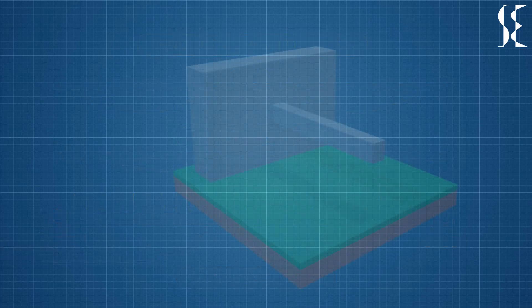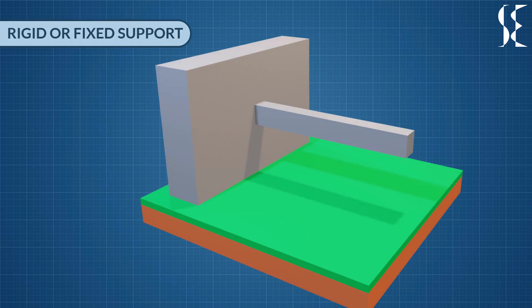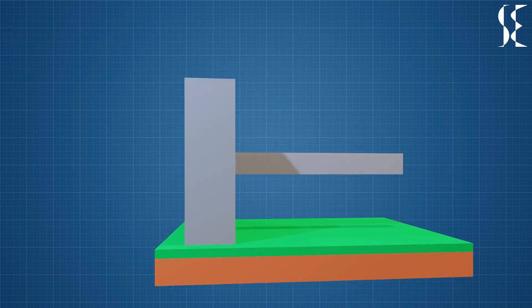Next we will see rigid or fixed support. This kind of support restricts any kind of motion, hence we will see all three reactions which are horizontal reaction, vertical reaction and a moment. This type of connection is used in concrete frame structure or in this case a cantilevered beam. They are represented as a single line for structural members and a hatched vertical line for fixed support.